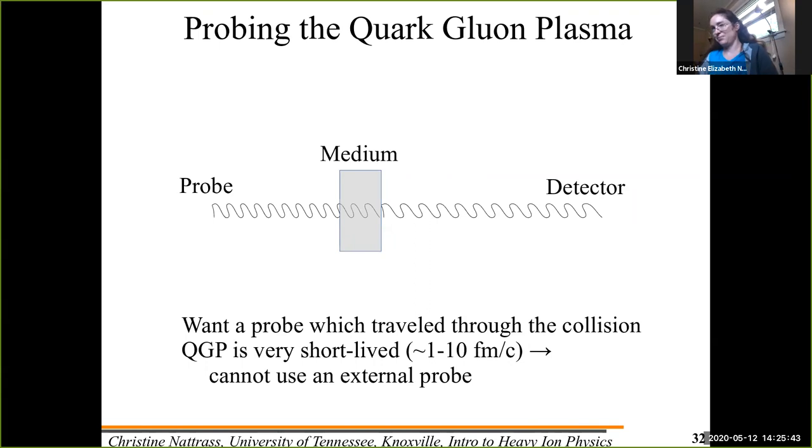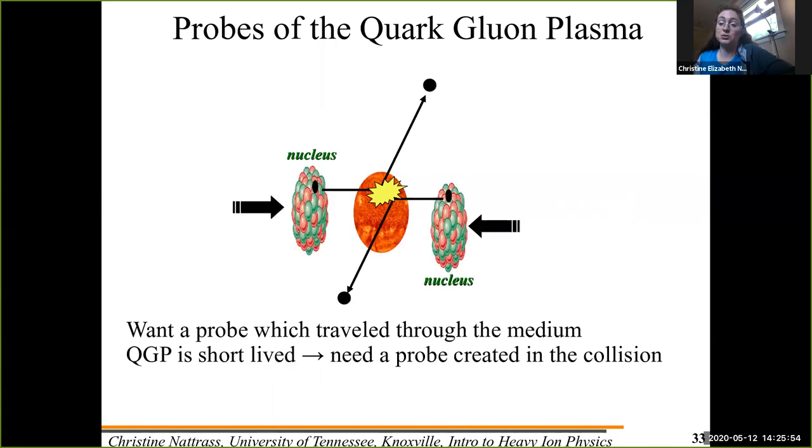The problem is that the quark gluon plasma lives one to ten femtometers over c, which is about 10 to the negative 23 seconds. So you can't shoot an external probe in. And it even happens that it is roughly transparent to light. So you can't use light. So you can't use an external probe.